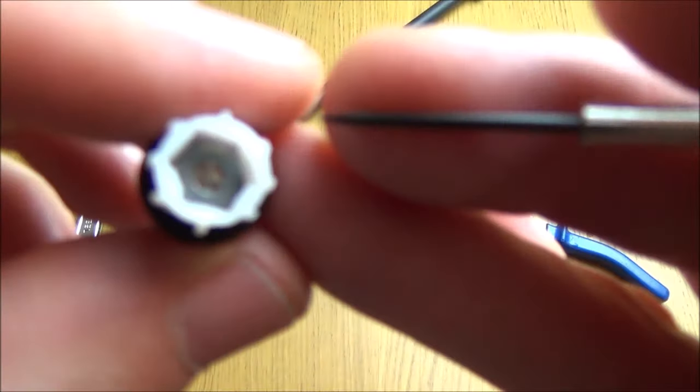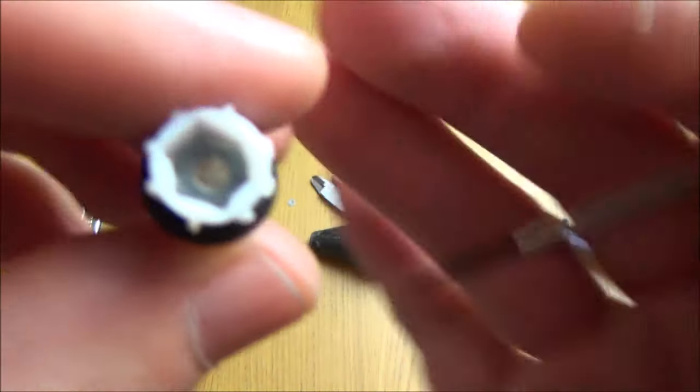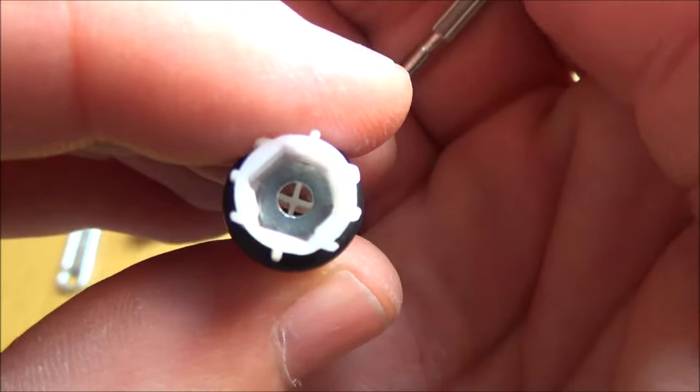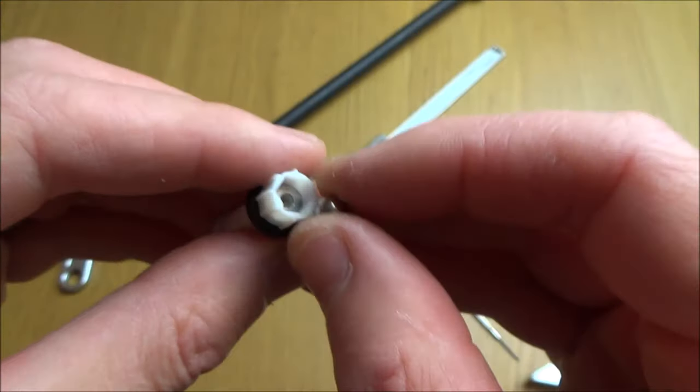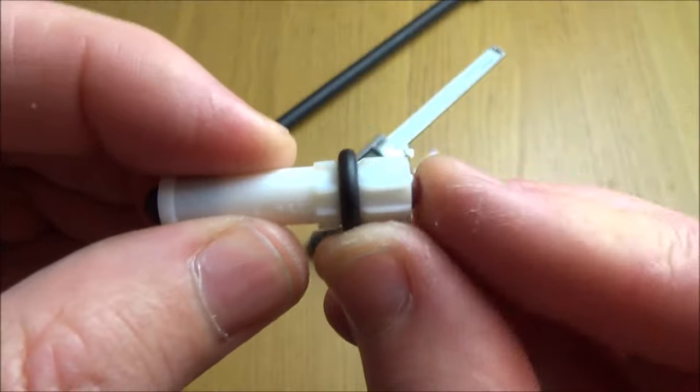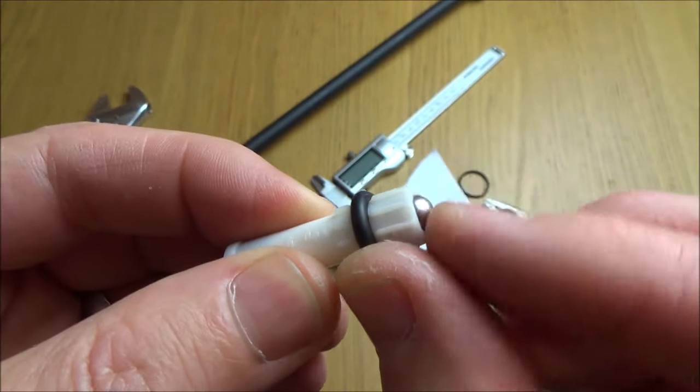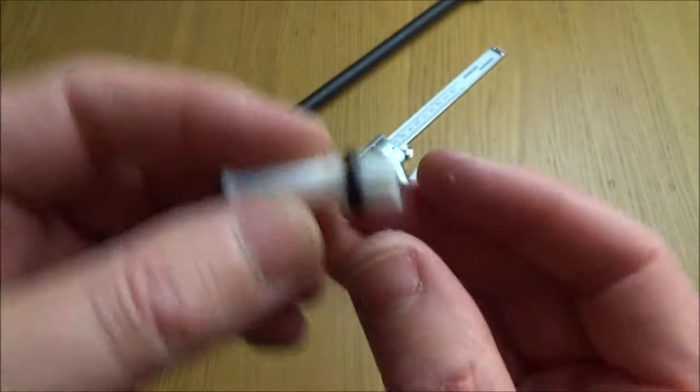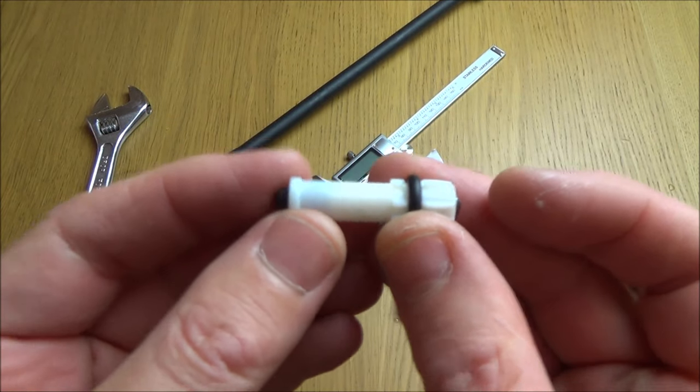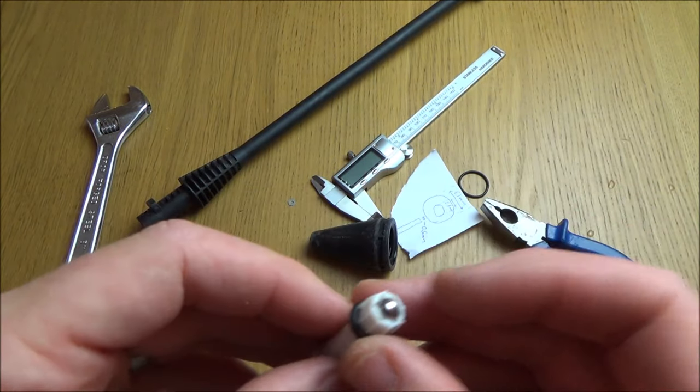Okay so you can see now it's sat there nicely on the legs yet it will still allow the water through it to go down underneath. Now if we pop the ball bearing back in you can see now it's sticking out more yet it's still allowed to move freely and it doesn't come out. So what we've done is we've increased the overall length of it which will now fix the problem.